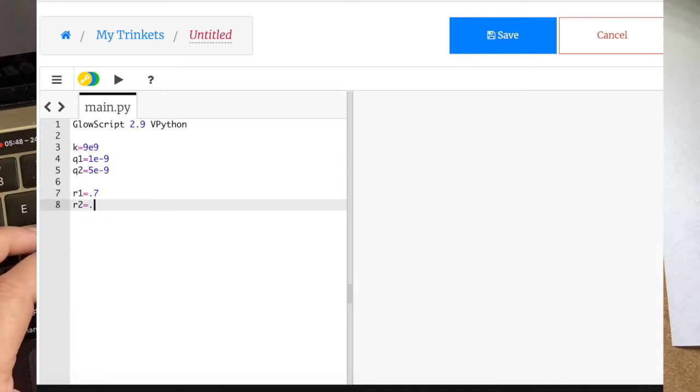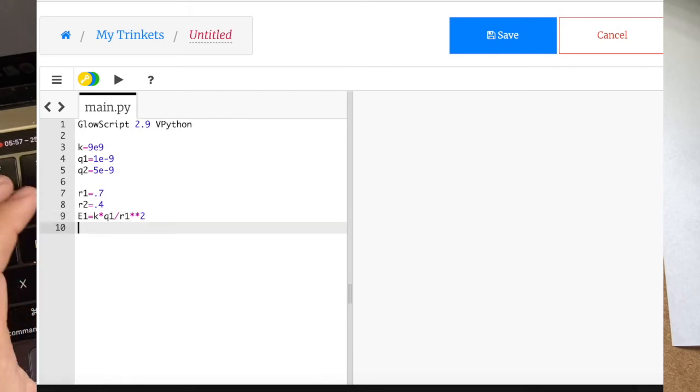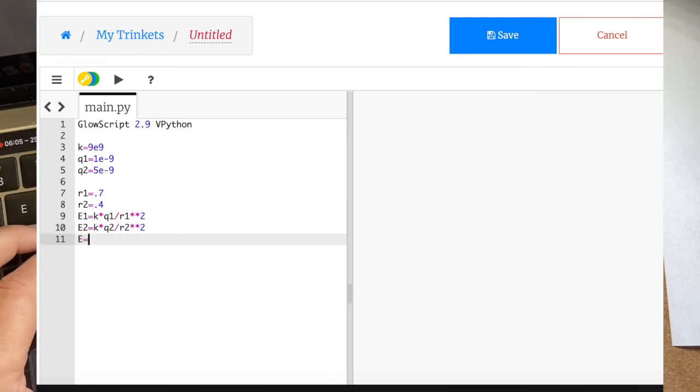Let's just say R1 is equal to 0.7. R2 is equal to 0.4. E1 is equal to K times Q1 divided by R1 squared. E2 is equal to K times Q2 divided by R2 squared. And then the total E is going to be E1 plus E2.